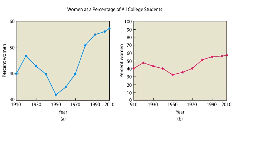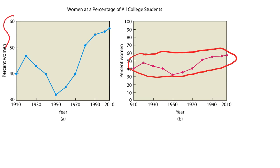Another example: women as a percentage of all college students. On the full-scale graph on the right, it barely looks like there's any change since all the data is between about 30 and 60 percent. But if we zoom in on that range, we can see it jumped around a lot — it went really down by 1950, but since then has risen to where women are now actually more than 50% of college students, which is much easier to see when zoomed in.